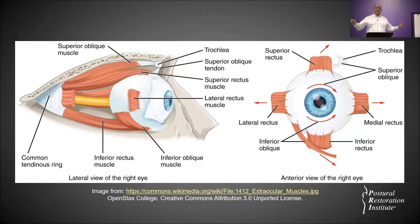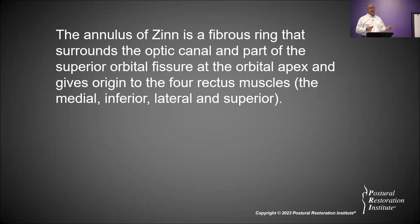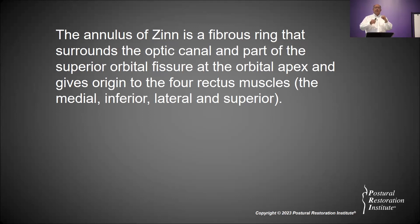When you look at the annulus of Zinn — that fibrous ring in the back of your eye surrounding an optic canal — it surrounds your brain. That optic canal has brain tissue directly connected to the midbrain. The superior orbital fissure at that orbital apex gives origin to the four major muscles of your body's ability to shift and rotate: the medial, inferior, lateral, and superior ocular muscles.